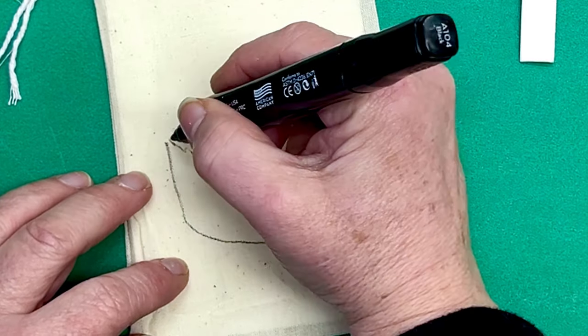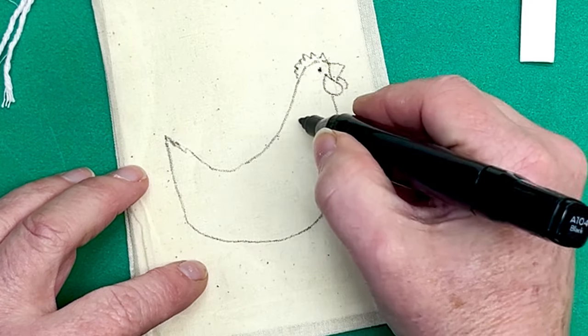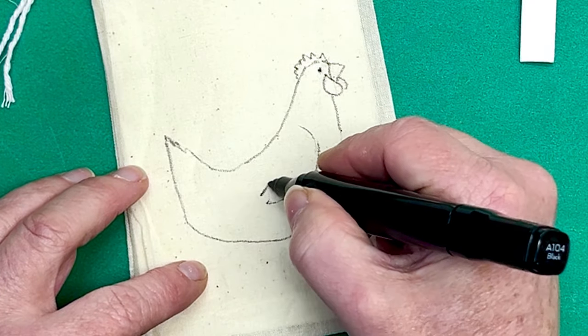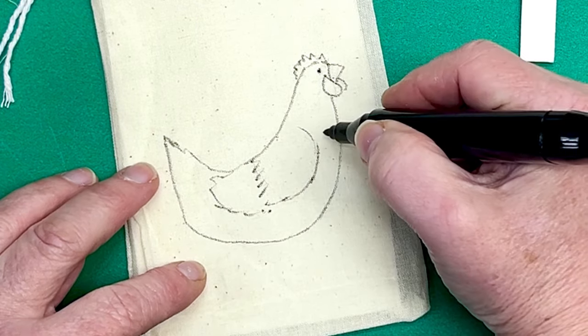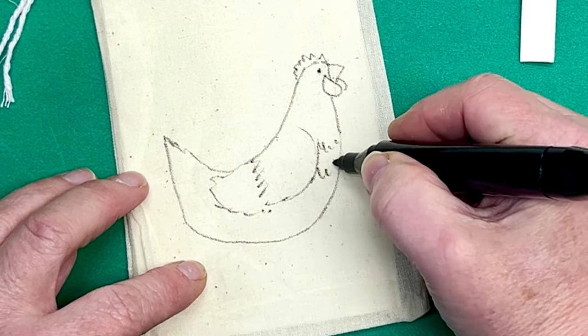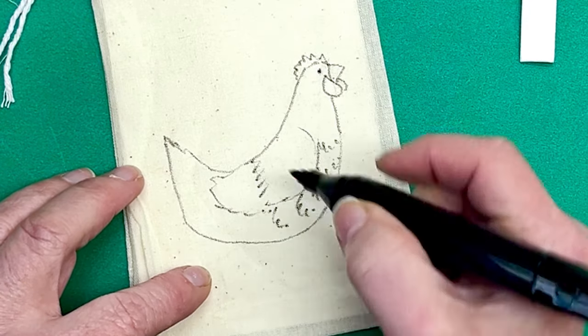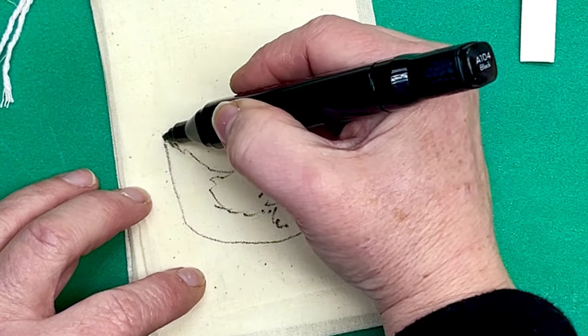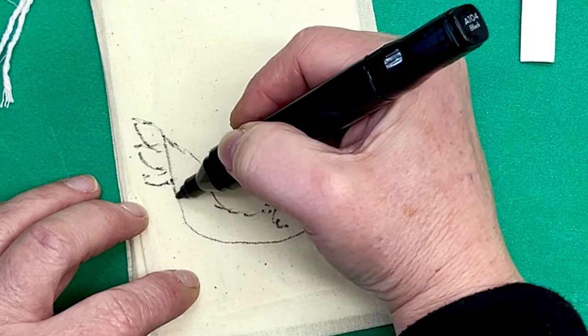There's the comb on the top of the head and then a cute little eye. Doesn't have to be really detailed here, guys. This is a treat bag. She's got her little feathers for her wing, some feathers coming down her chest and maybe a few little feathers coming off the tail.